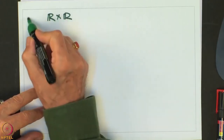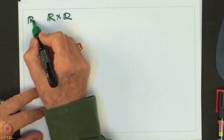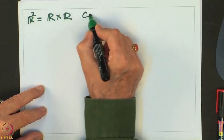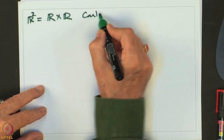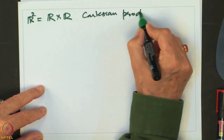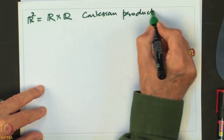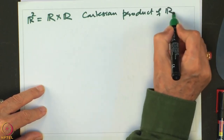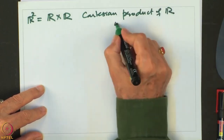Let me explain that a bit more. Here is R cross R. R2 is the Cartesian product of the set of real numbers with itself.